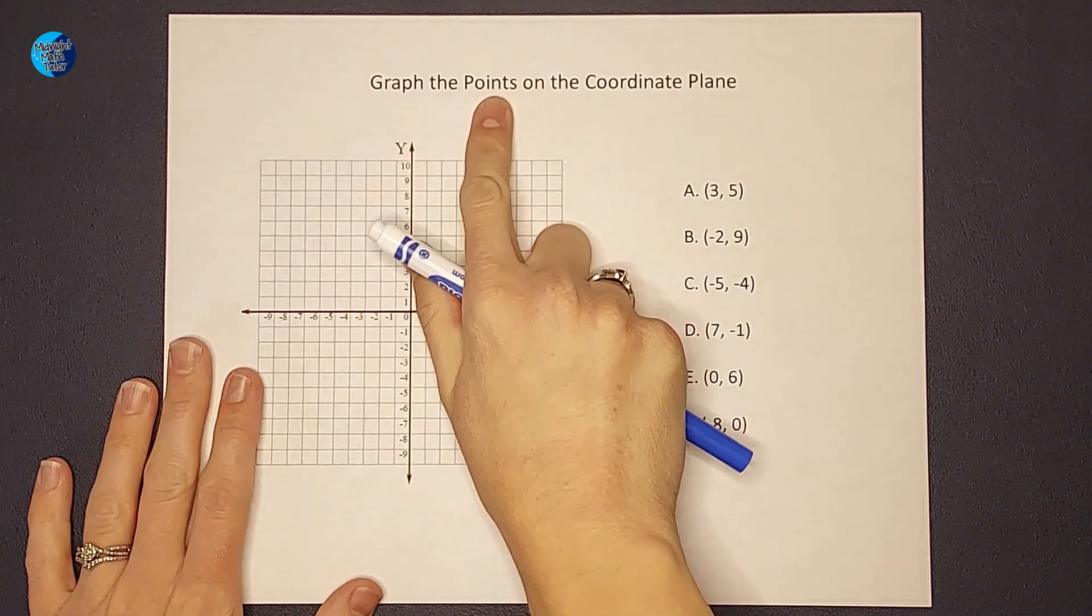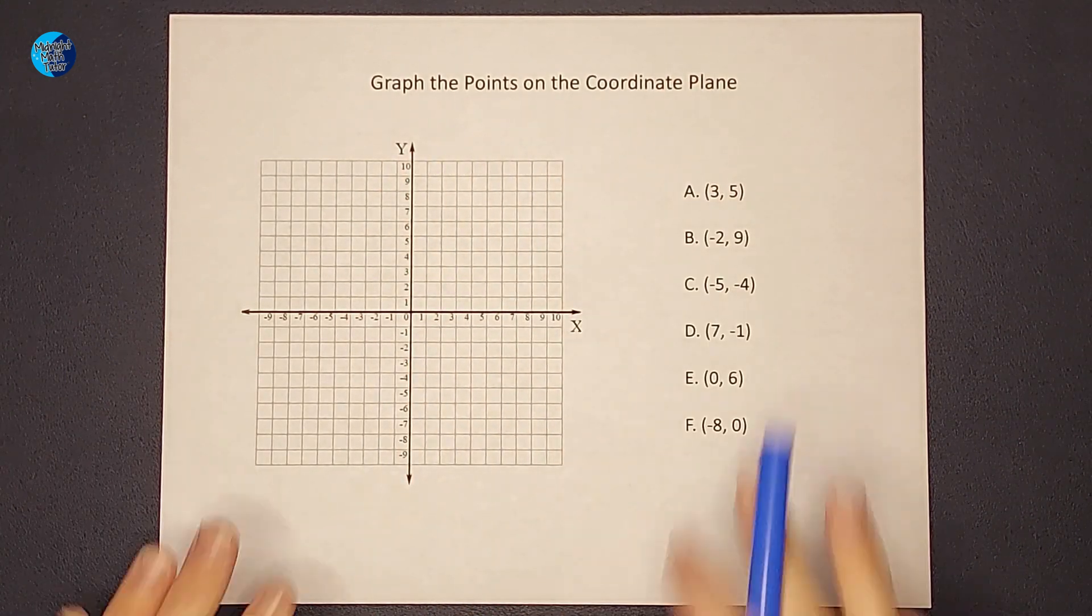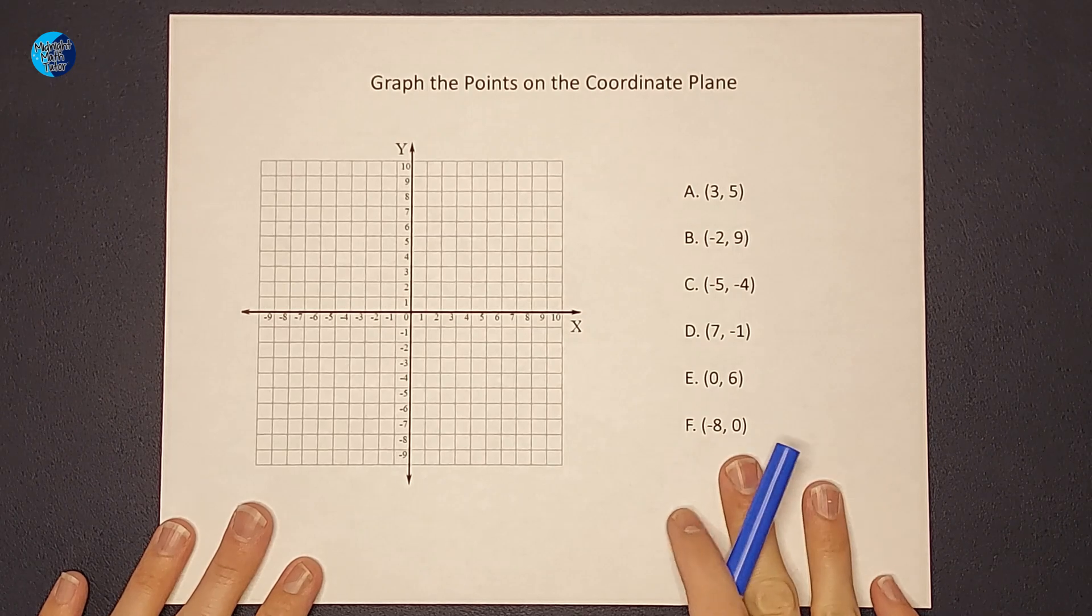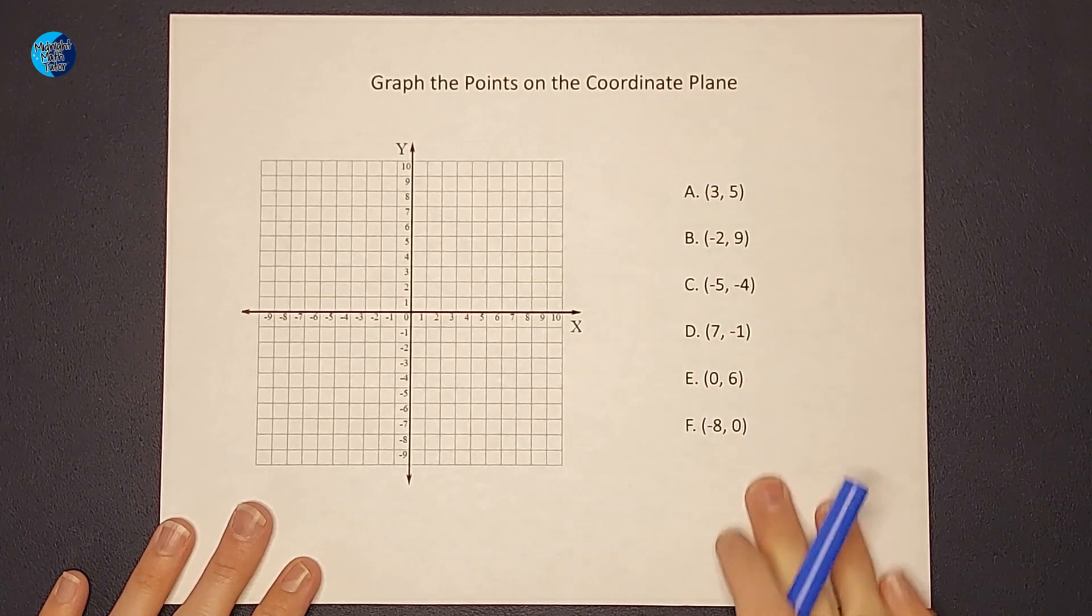Hey guys, we are going to graph points on our coordinate plane. These are often called ordered pairs. If you ever hear that term, this is what they are referring to.